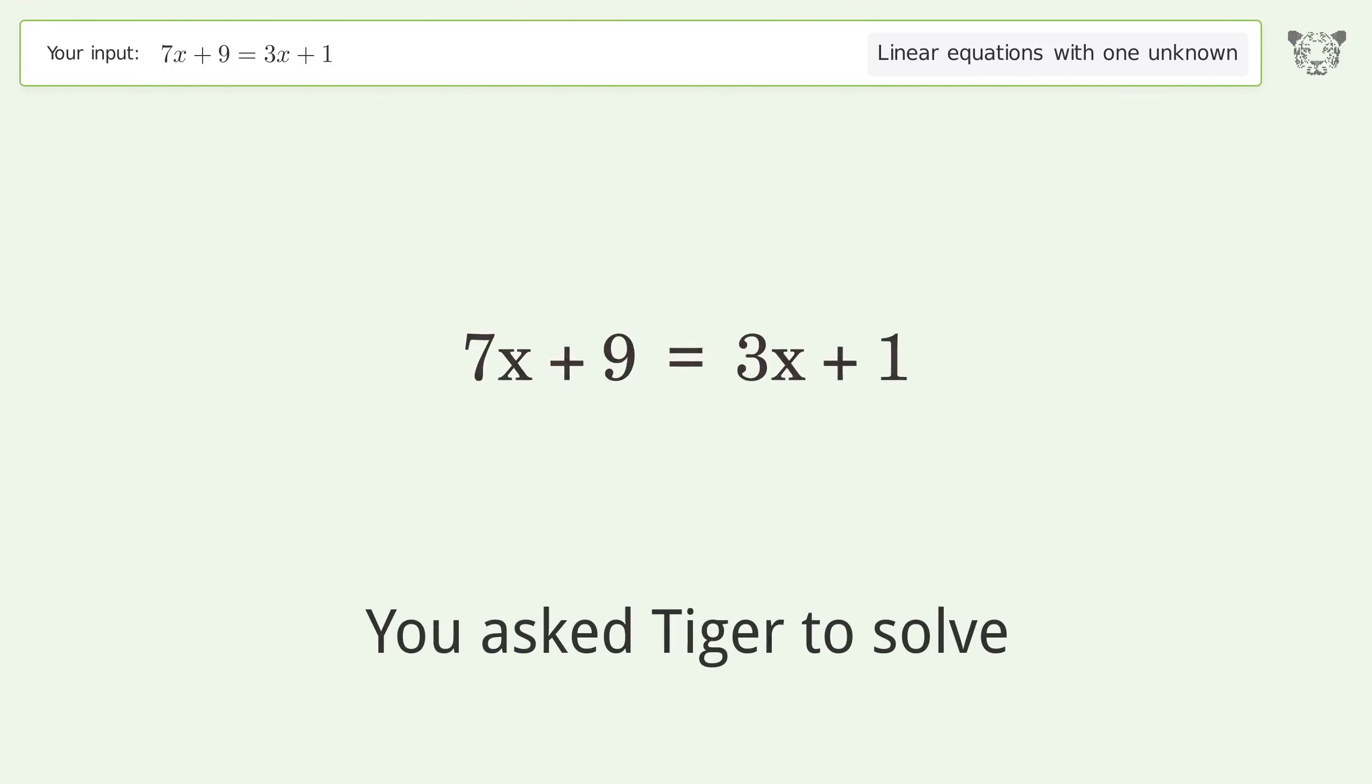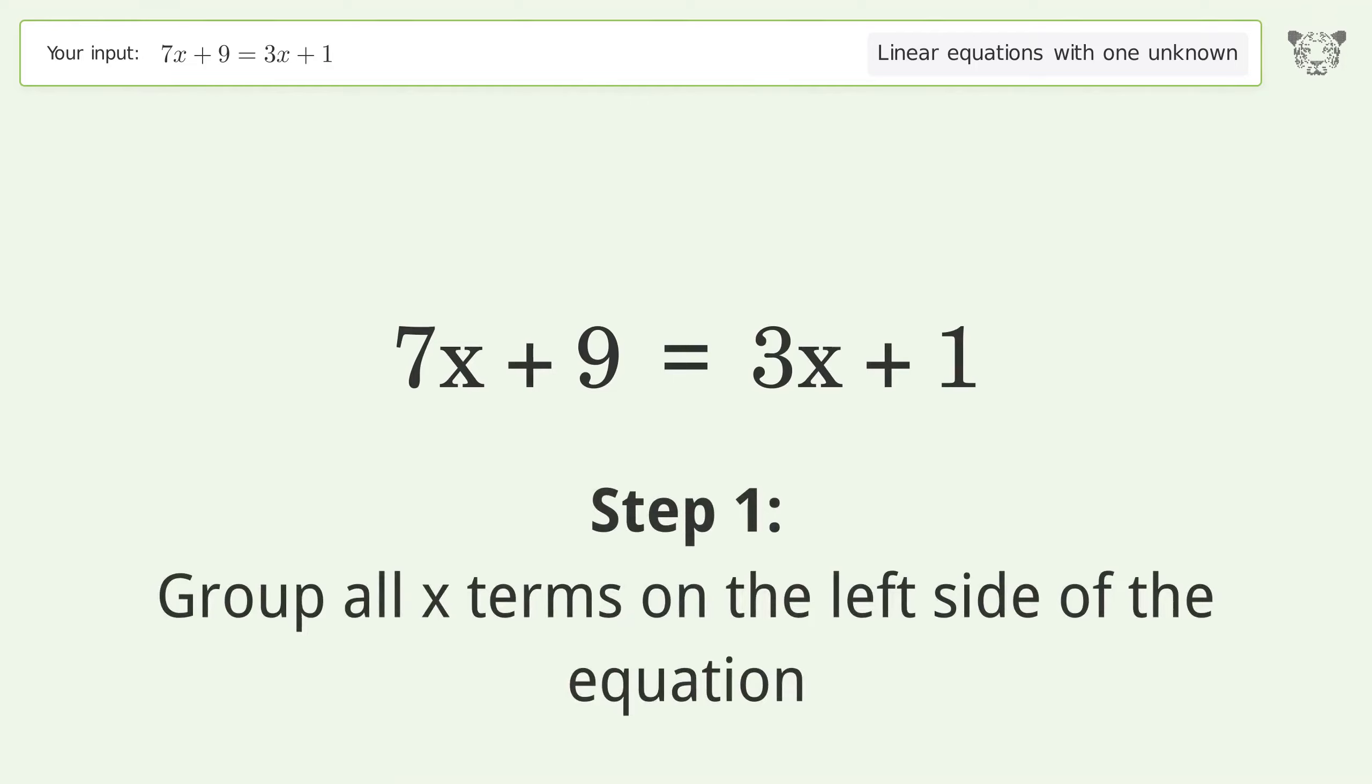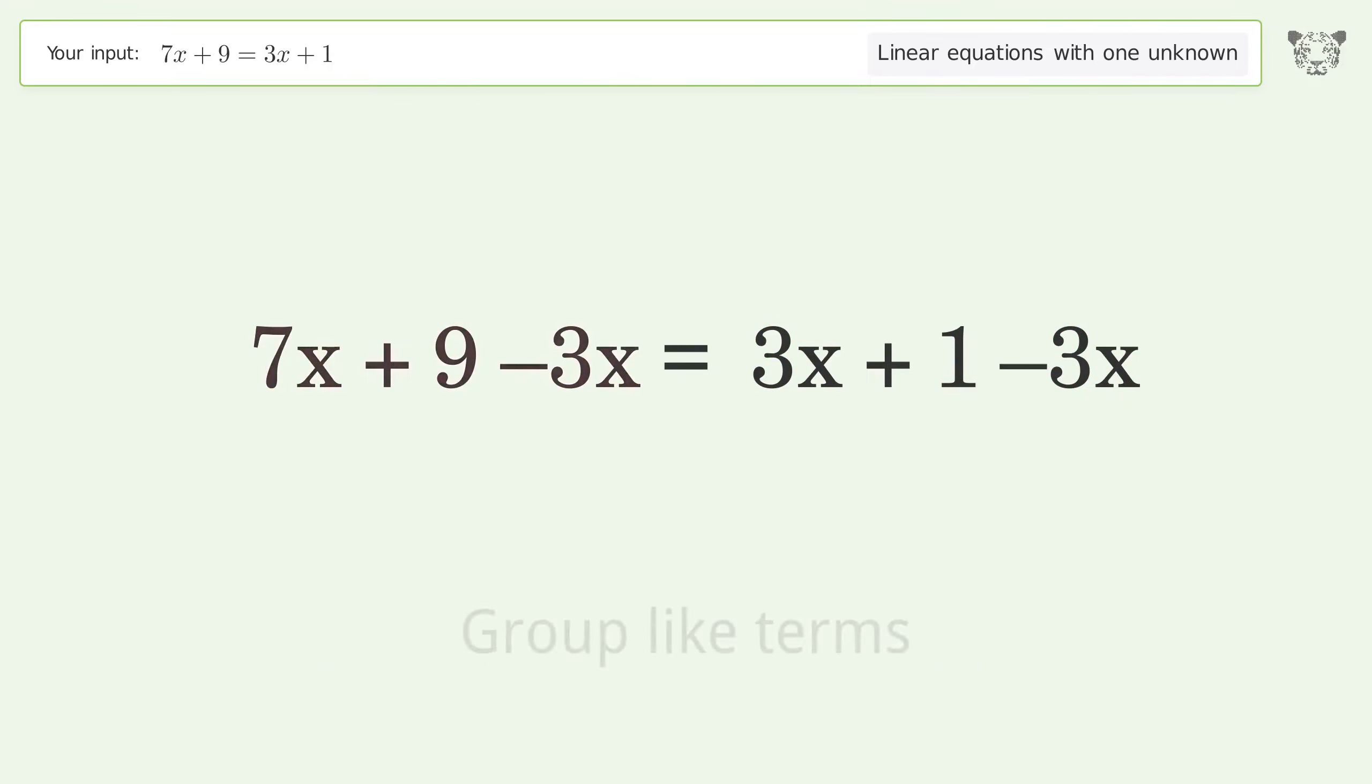You asked Tiger to solve this. This deals with linear equations with one unknown. The final result is x equals negative 2. Let's solve it step by step. Group all x terms on the left side of the equation. Subtract 3x from both sides. Group like terms.